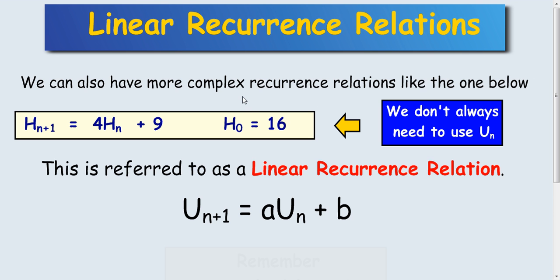In this lesson we're going to look at slightly more complicated recurrence relations like the one below: H n+1 equals 4 times H n plus 9, with starting value H₀ equals 16.